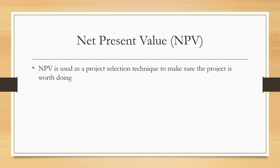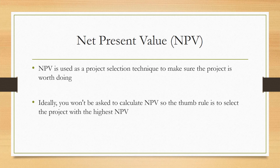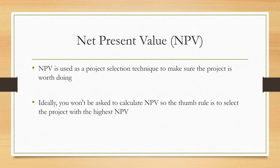Net Present Value is used as a project selection technique to make sure a project is worth doing. You won't typically be asked to calculate NPV; the thumb rule is to select the project with the highest net present value. Going back to the PV formula — PV equals FV divided by (1 + r) to the power n — you would naturally select the project that gives you the most value relative to the money you are investing today.